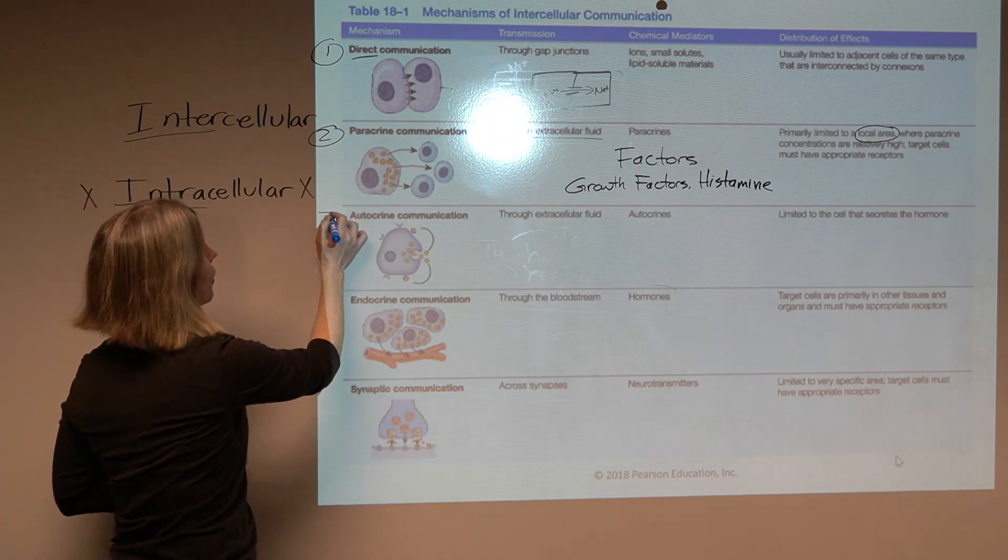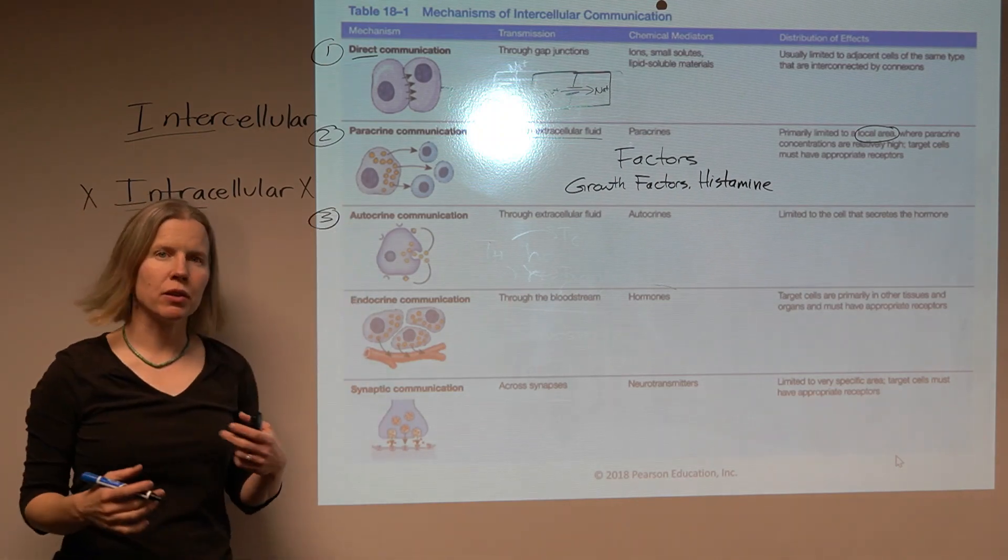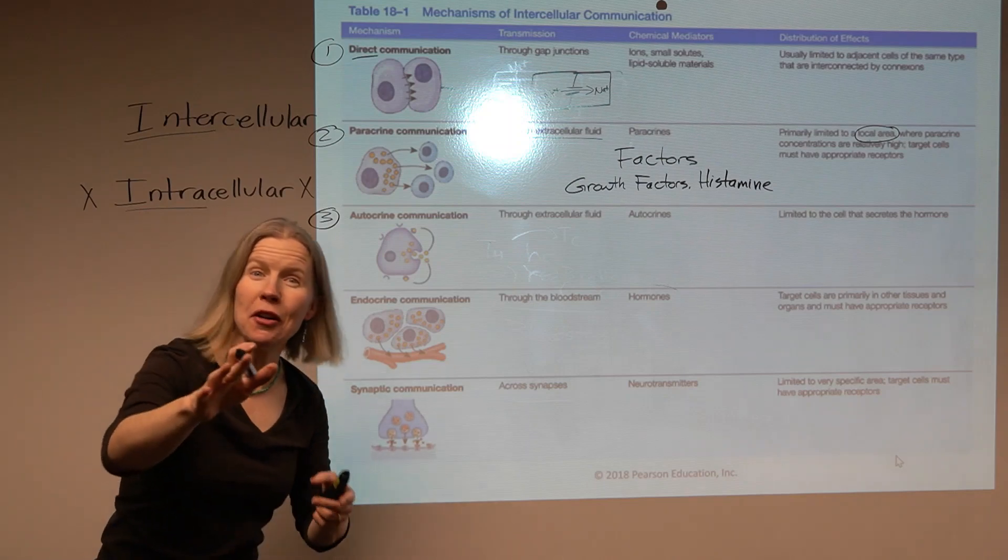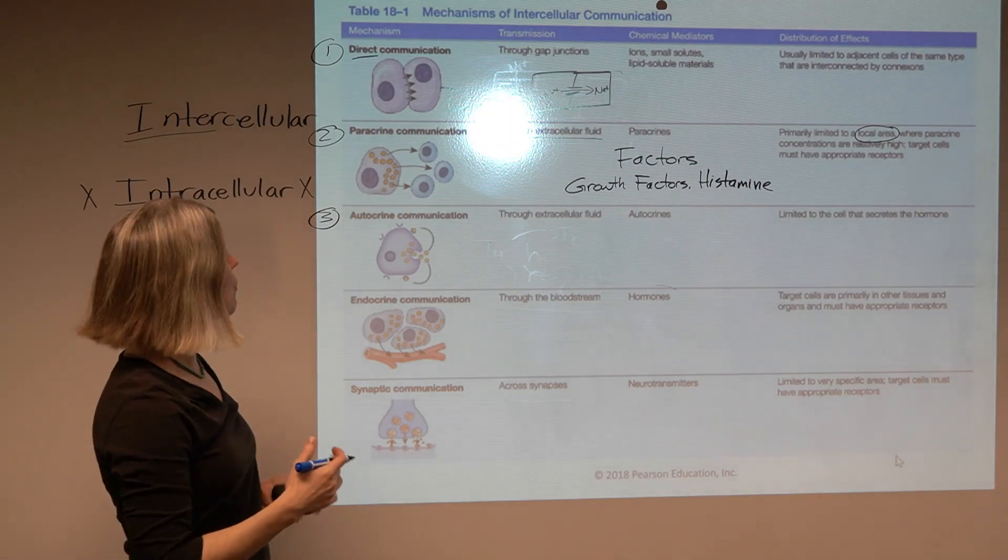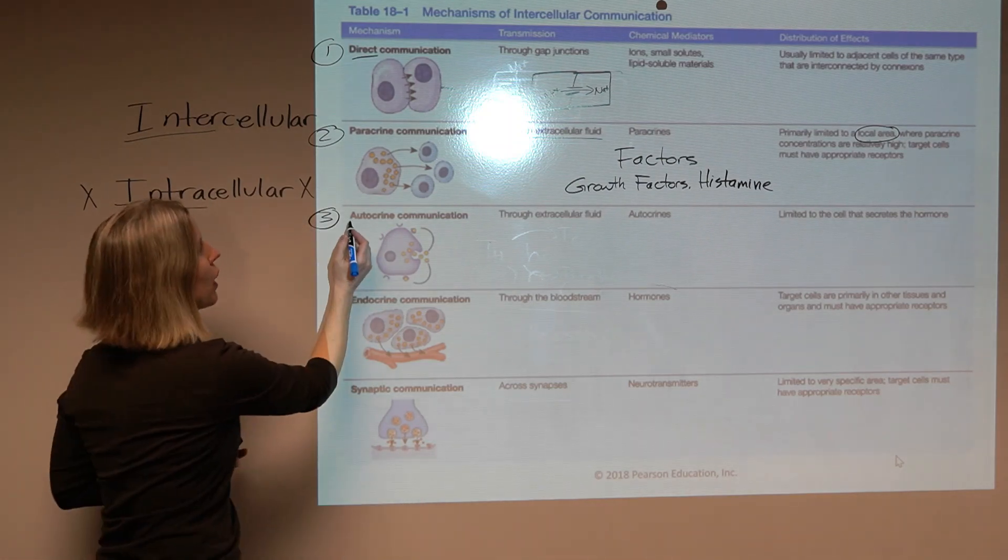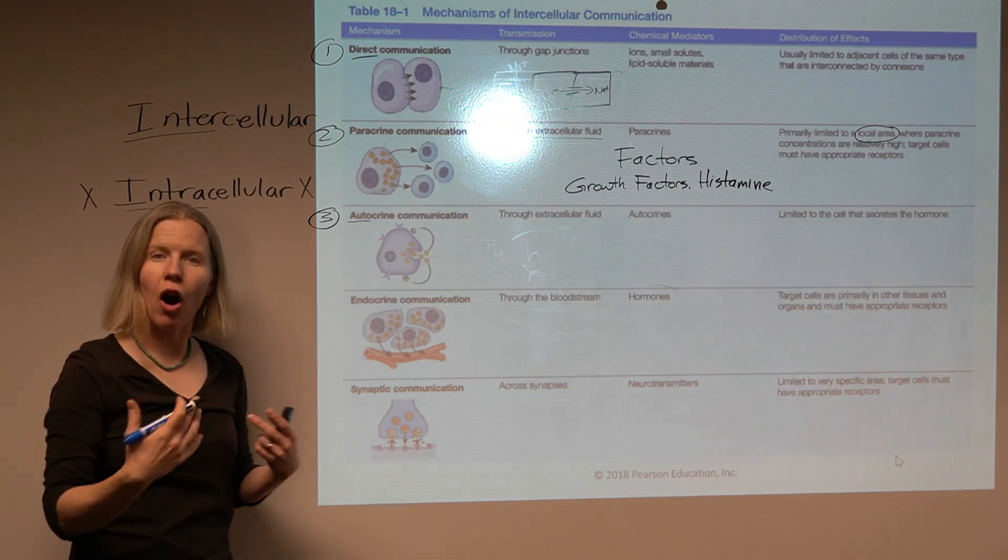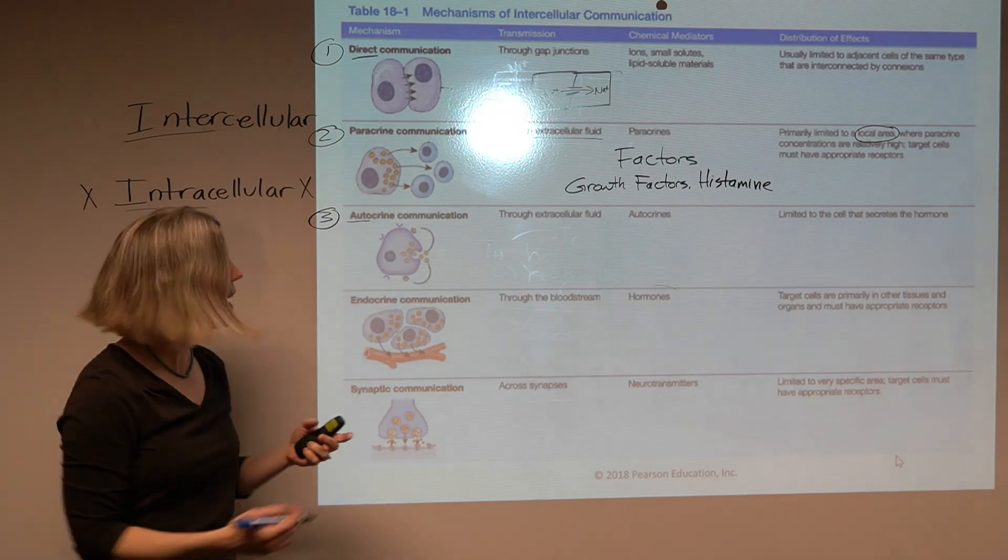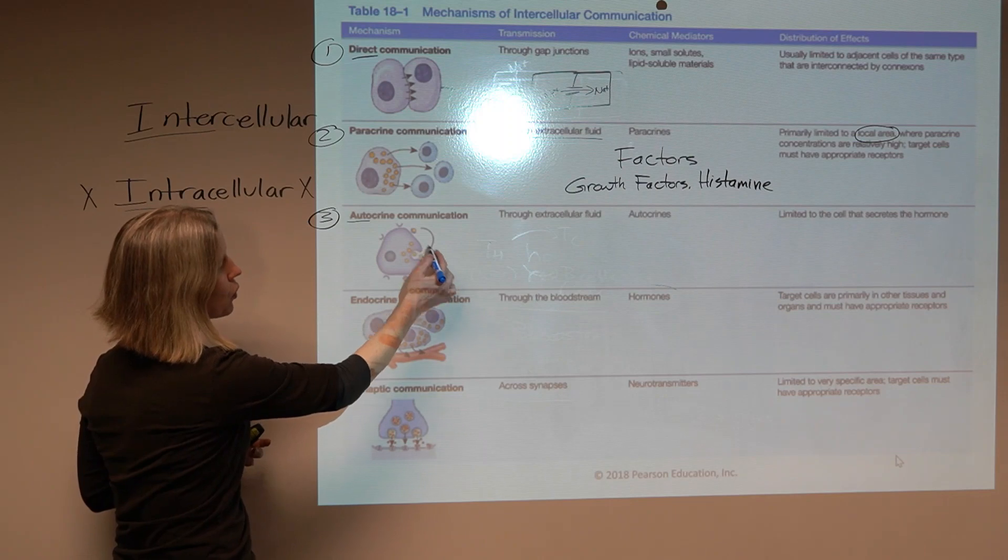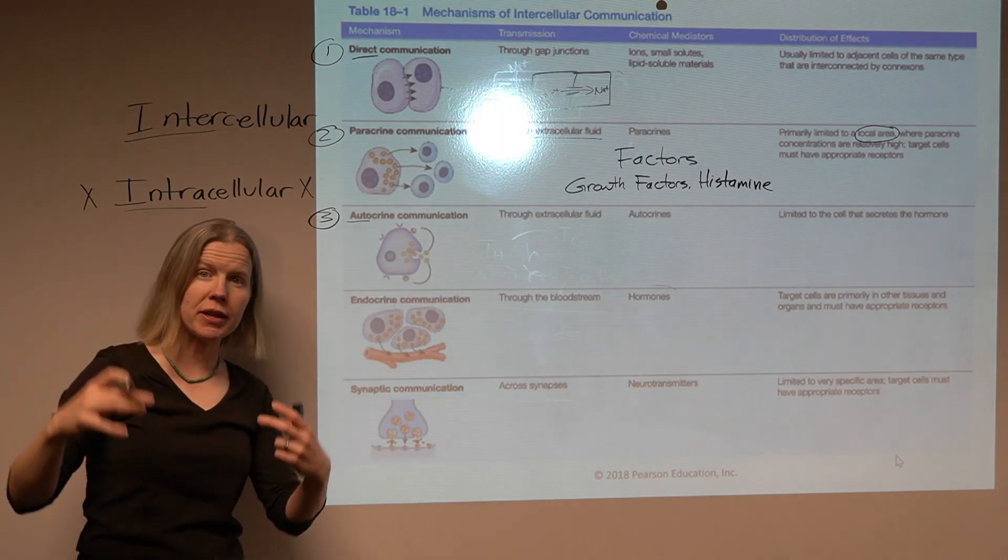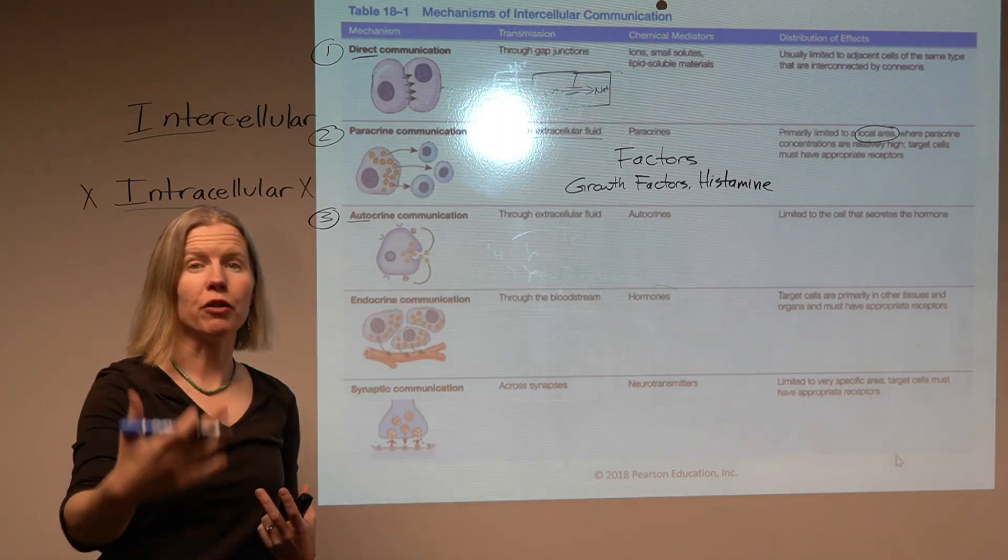Autocrine communication. This is one that students and myself have a little bit harder time wrapping our heads around. Because autocrine, auto is meaning self. And so in this picture here, they have chemicals being released and actually docking to receptors on the same cell that released them.